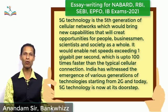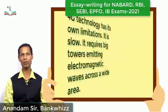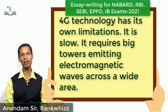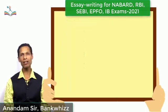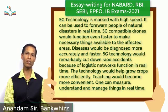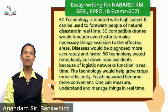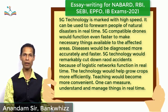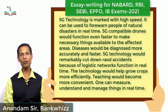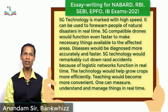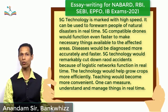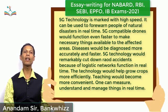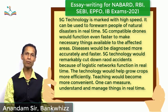Now let's discuss some other dots. 4G technology has its own limitations — it is slow and it requires big towers emitting levels of electromagnetic waves across a wide area. But on the other hand, the most important feature of 5G technology is its high speed, and so it can be used to warn people of natural disasters in real time. 5G compatible drones would function even faster to make necessary things available to affected areas. Diseases would be diagnosed more accurately and faster. 5G technology would remarkably cut down road accidents because logistic networks function in real time. The technology would help grow crops more efficiently. Teaching would become more convenient.